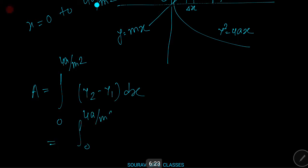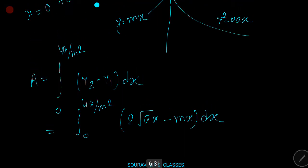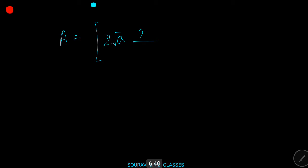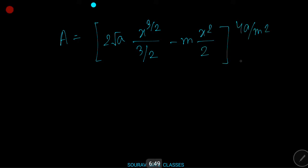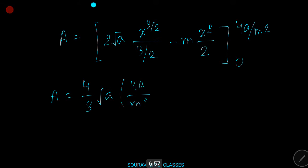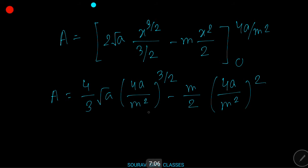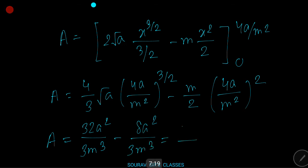Therefore A = ∫₀^(4a/m²) (2√(ax) - mx) dx = [2√a · x^(3/2)/(3/2) - mx²/2]₀^(4a/m²) = (4a/3)·√a·(4a/m²)^(3/2) - (m/2)·(4a/m²)² = 32a²/(3m³) - 8a²/(m³) = 8a²/(3m³) square units.